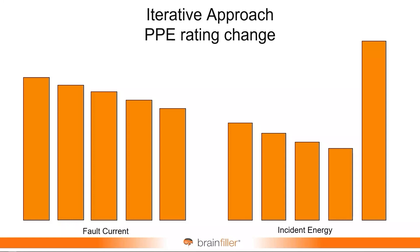What you've done is you've defined a range of fault currents where the PPE that you want to use is acceptable, and you've identified how low this can go before you start to have trouble with device operation. Not a perfect answer, but at least it'll give you a range.